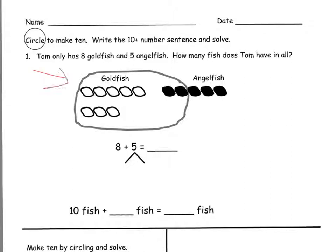The picture is already drawn for you here. There are 8 goldfish and 5 angelfish. We need to figure out how many fish Tom has all together.